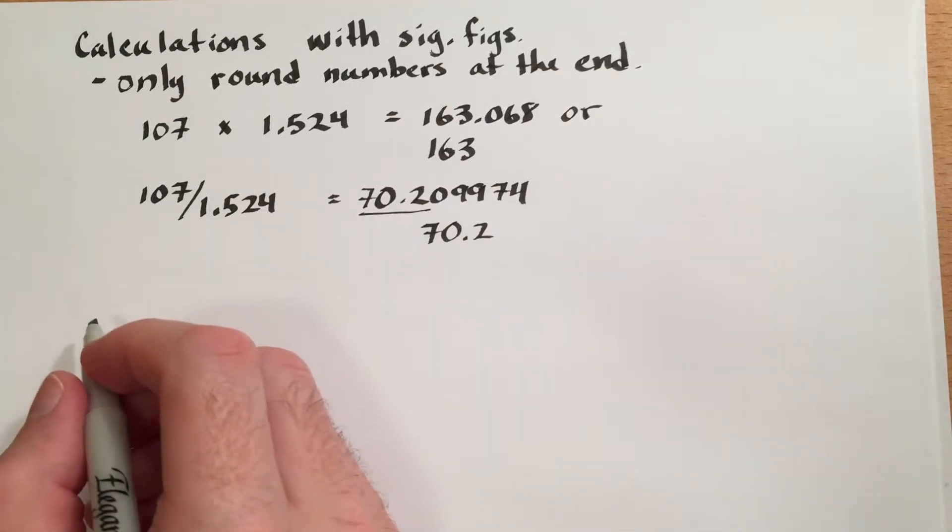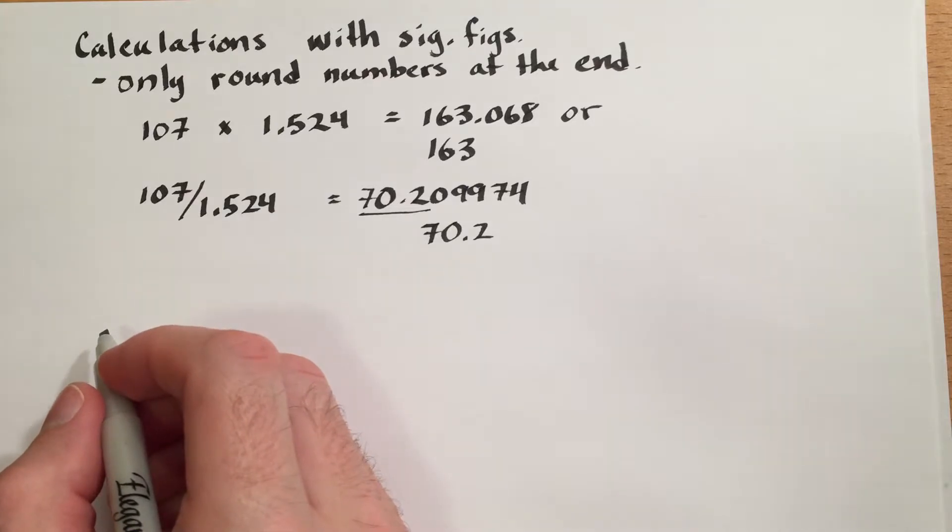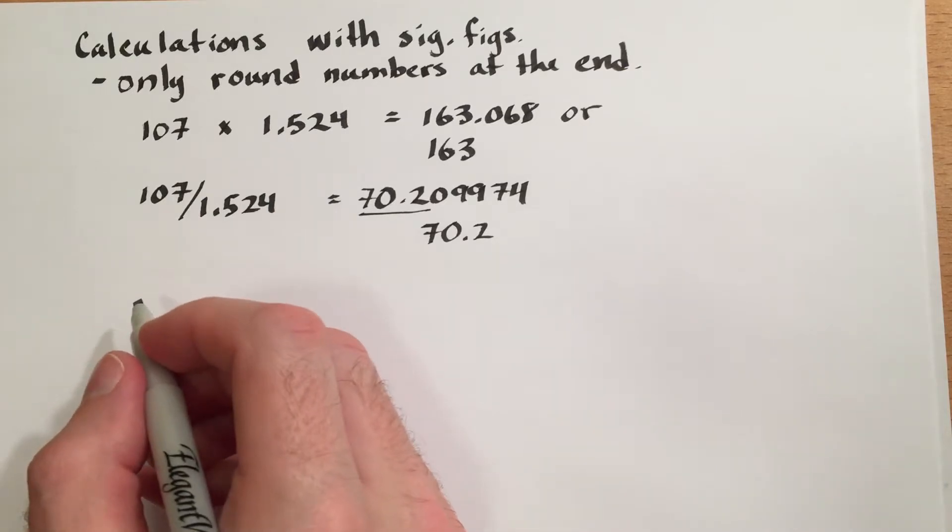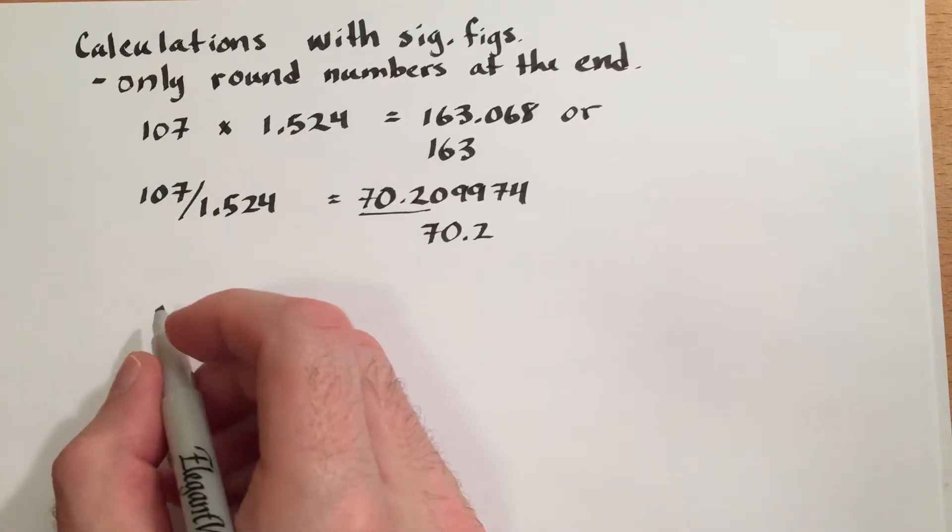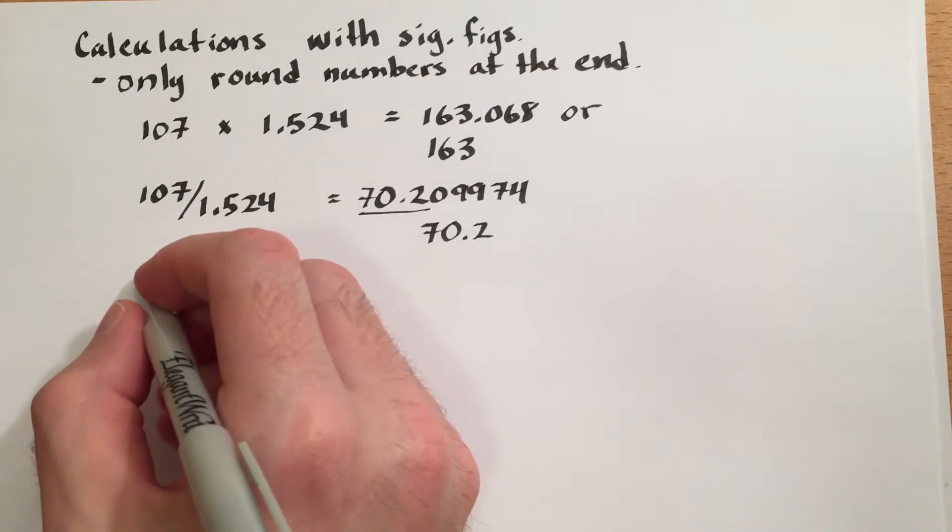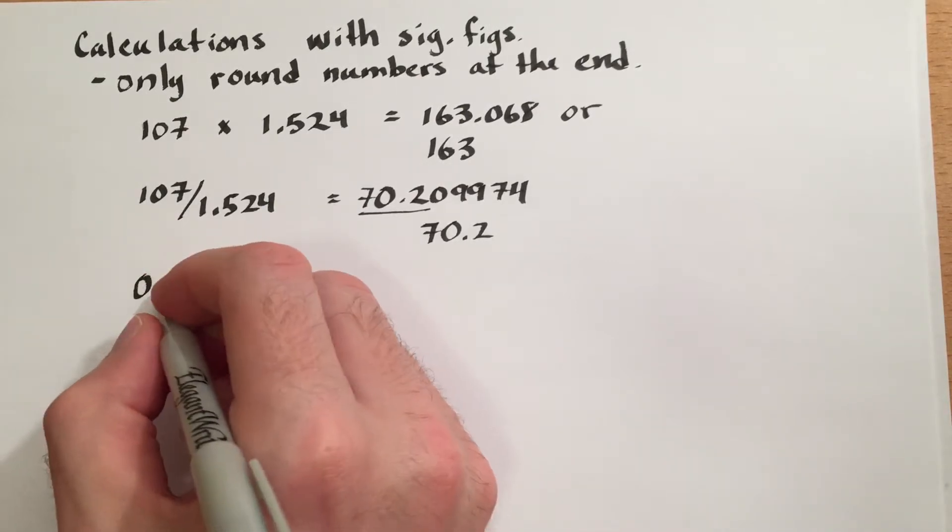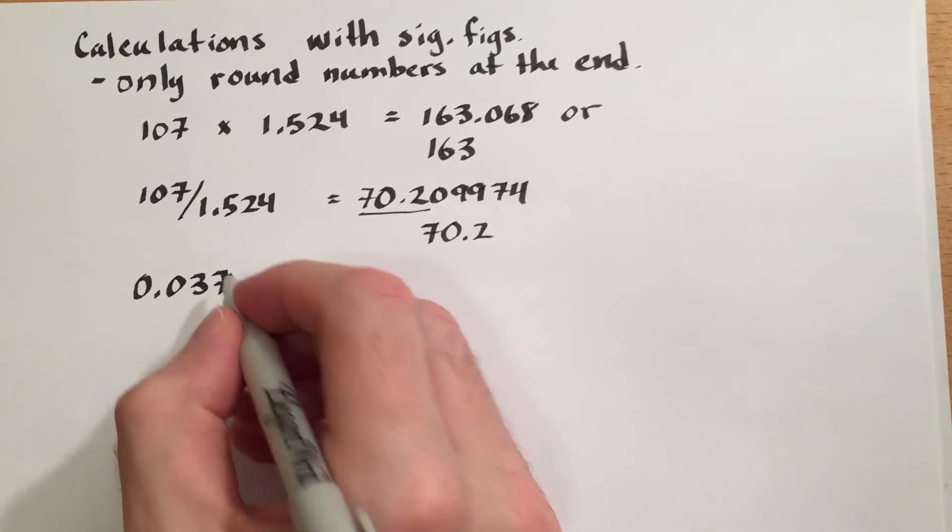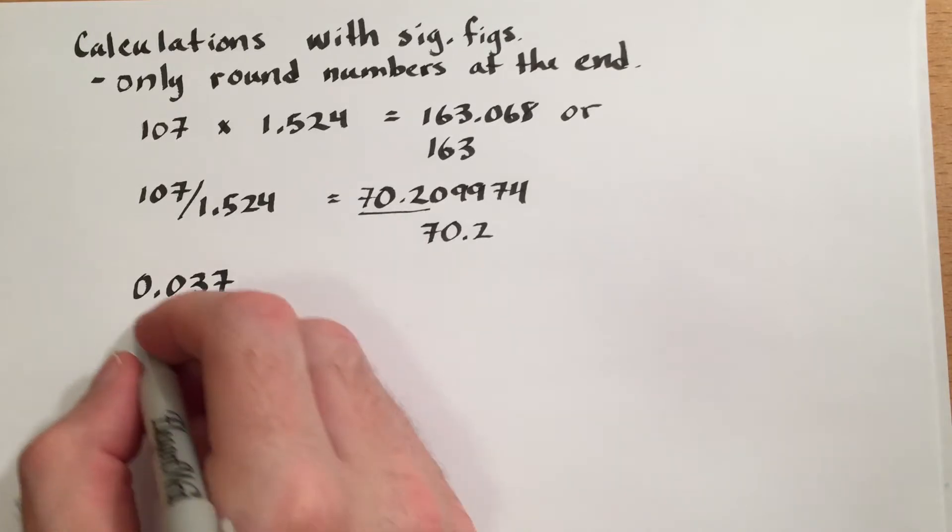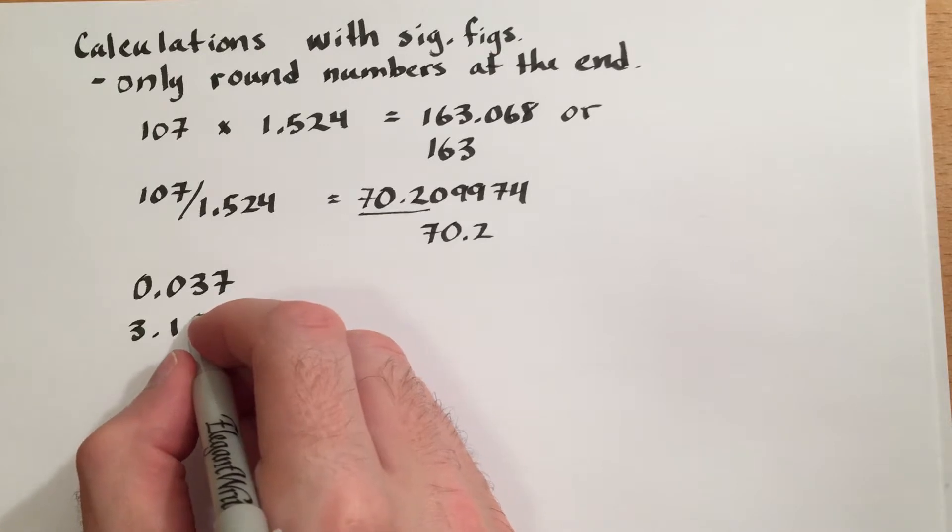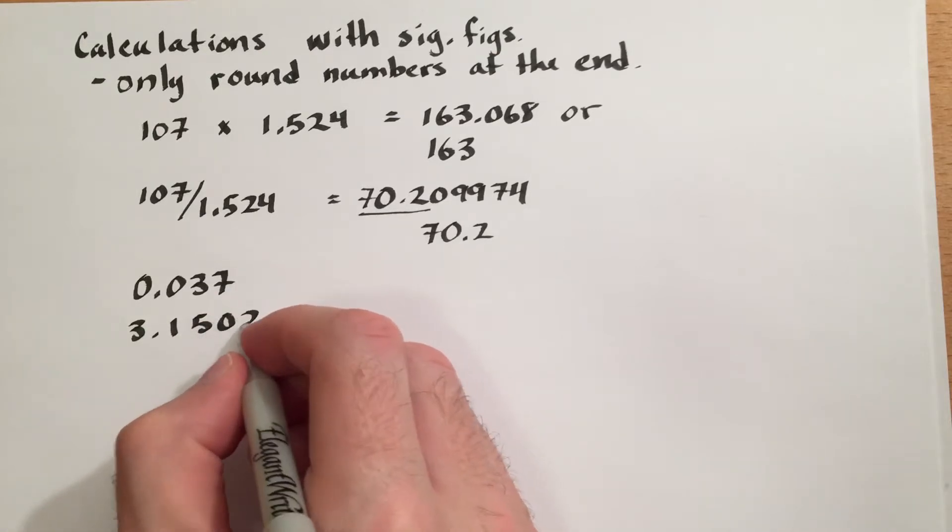Addition and subtraction are a little different. We count the number of decimal places, and then compute the answer to the same number of decimal places. So as an example, I will add 0.037 to 3.1502.